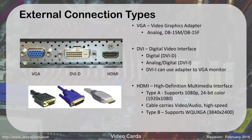DVI is your digital video interface. There are three types: DVI-A, which is an analog version; DVI-D, which is fully digital; and DVI-I, which is integrated and supports both digital and analog. The difference is visible on the connector — if you see two dots above and two dots below the dashed line, it's a DVI-I.